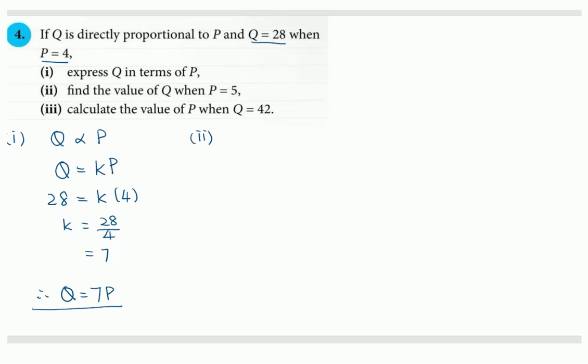Part 2. So Q is 7P. And now P is 5. So 7 times 5 gives us 35. So our value of Q will be 35.